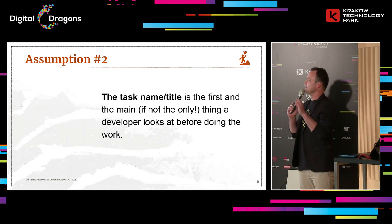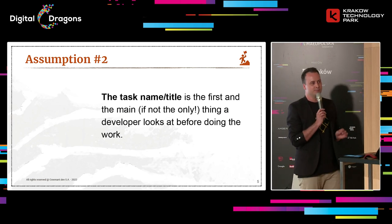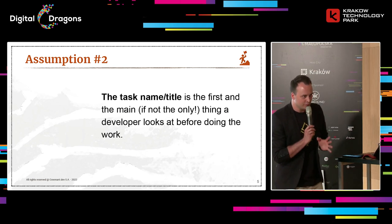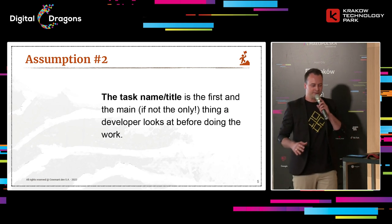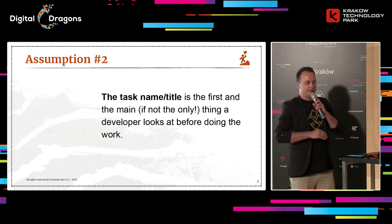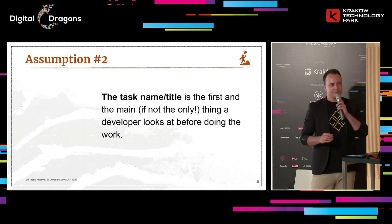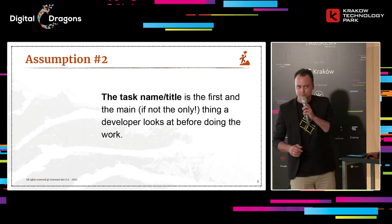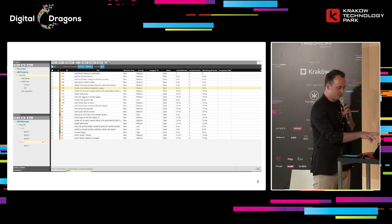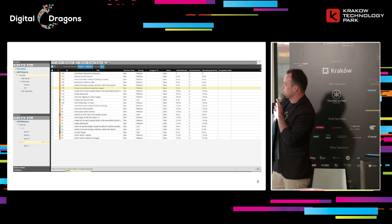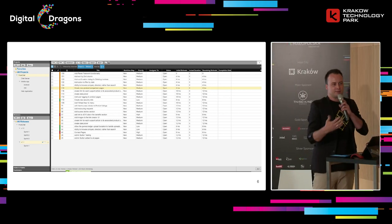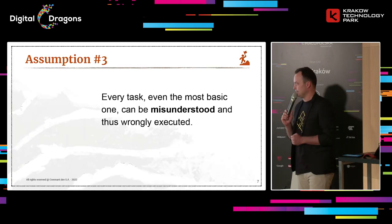My second assumption is that the task names or task titles are the first and main thing — hopefully not the only thing — that the developer looks at before doing the work. Usually you have various different fields in your project software, like descriptions, references, attachments, et cetera. But chances are that not all of them are filled. This is probably something similar to what you look at every day — the task title is the main column, the broadest one. That's just to illustrate how big a deal the task title is.